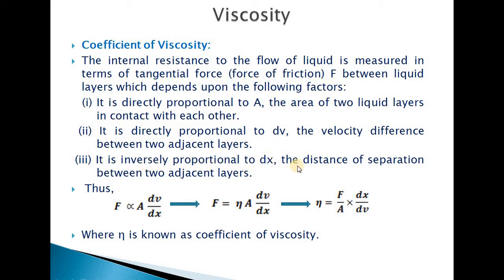Third, the force of friction is inversely proportional to the distance of separation between two adjacent layers — smaller the distance, more is the friction. Combining these, the force of friction is directly proportional to A·dv/dx. Taking the constant of proportionality η (eta), we have: F = η·A·(dv/dx), or η = F/(A) · (dx/dv). This constant η is known as the coefficient of viscosity, where F is friction force, A is area of contact, dv is velocity difference, and dx is distance of separation.